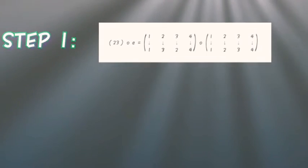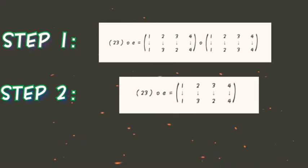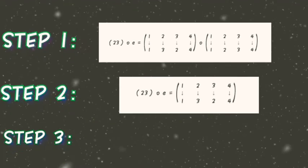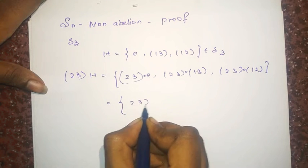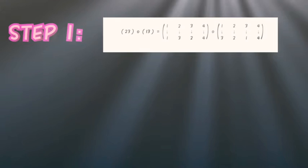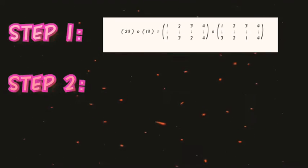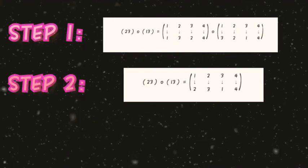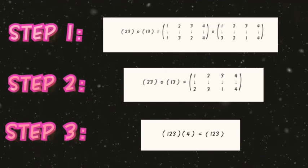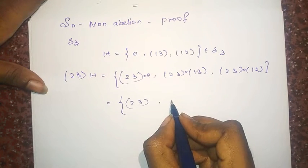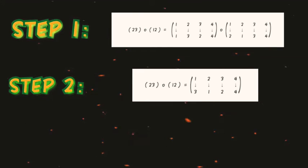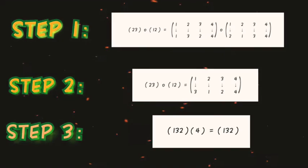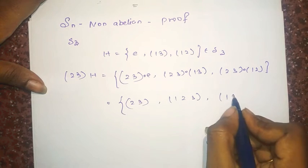So you get the answer to be (2,3). So you get the answer to be (1,2,3) and (1,2,3) and (1,3,2).